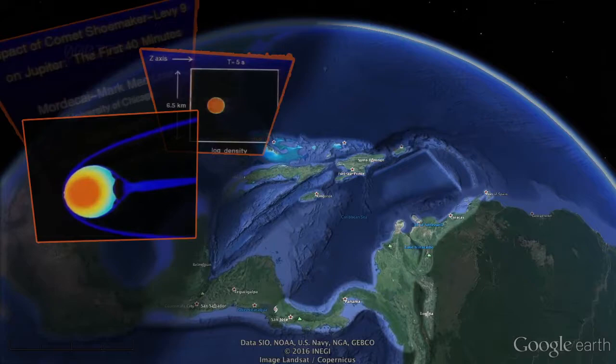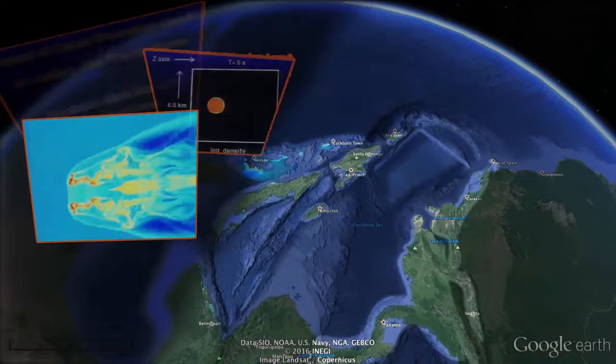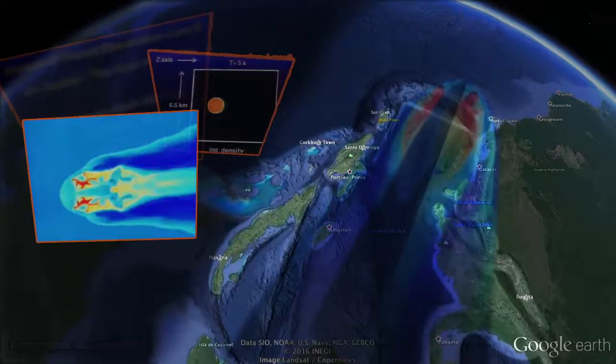I highlighted the area. You can see that this is what I think happened: a comet slammed into the Earth and left an impression. I decided to do a little research on it, so check this out.